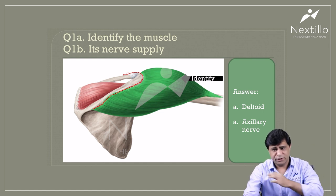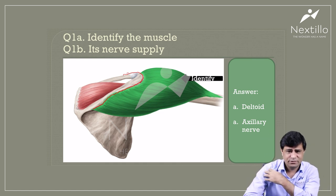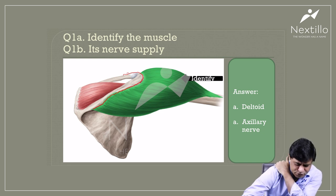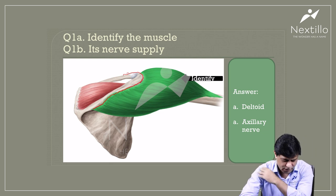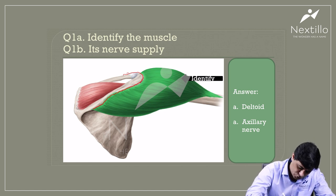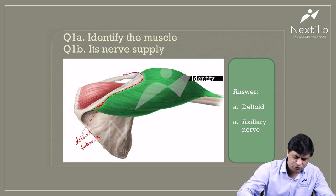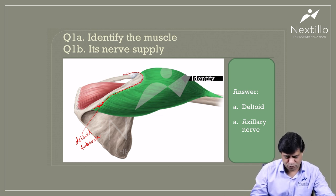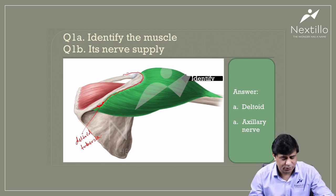The deltoid takes origin from the lateral one third of the clavicle anterior surface, the acromion, the edge of the acromion, then the lower lip of the spine of the scapula, and the posterior-most fibers arise from the deltoid tubercle — a tubercle on the lower end of the spine at the medial-most end.